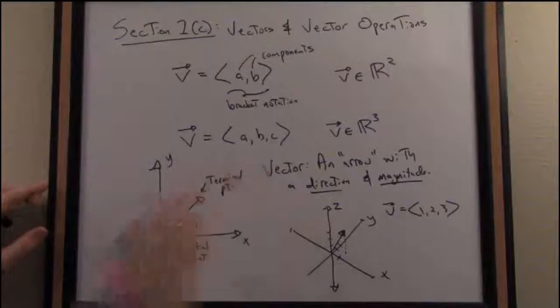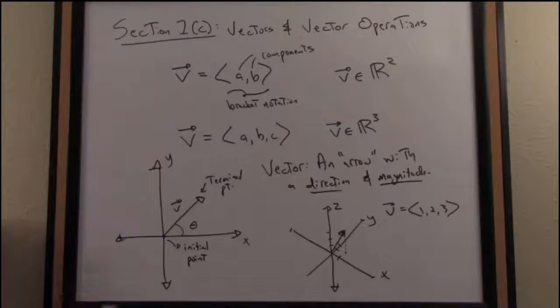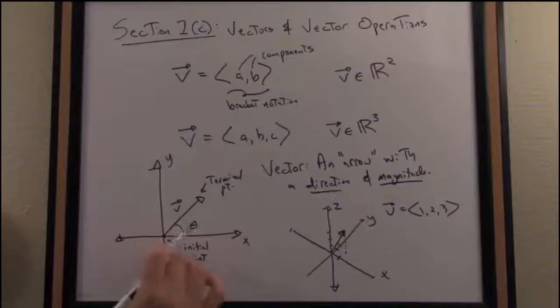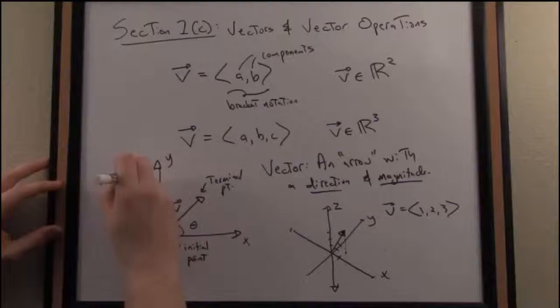So we start at the initial point, of course. And when you go in the direction of the terminal point, that defines the direction of the vector. One more little piece of notation. When a vector initiates at the origin, or its initial point is at the origin, that vector is said to be in standard position.